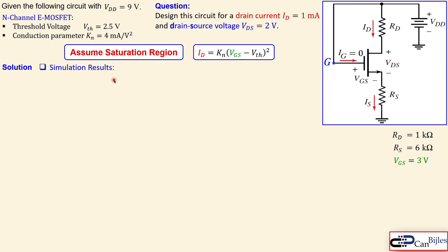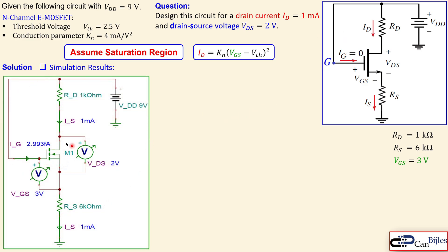These are the calculated resistor values along with VGS, which we'll verify in SPICE simulation. The circuit shows the N-channel enhancement MOSFET with voltmeters measuring VDS, VGS, and the source voltage, plus current meters for IS and ID. The simulation confirms one milliamp for ID and IS, gate current nearly zero, VGS equals three volts, and VDS equals two volts — all as required.